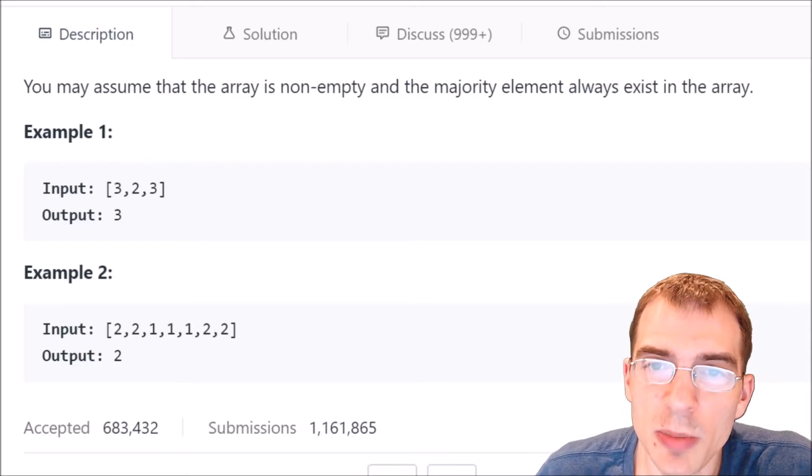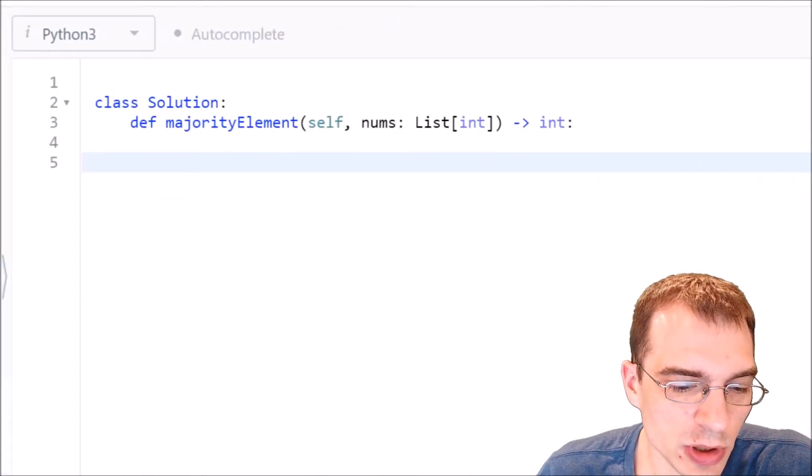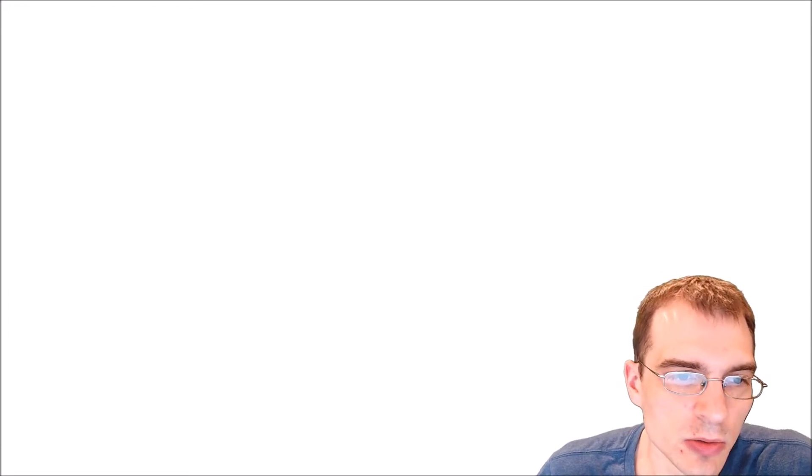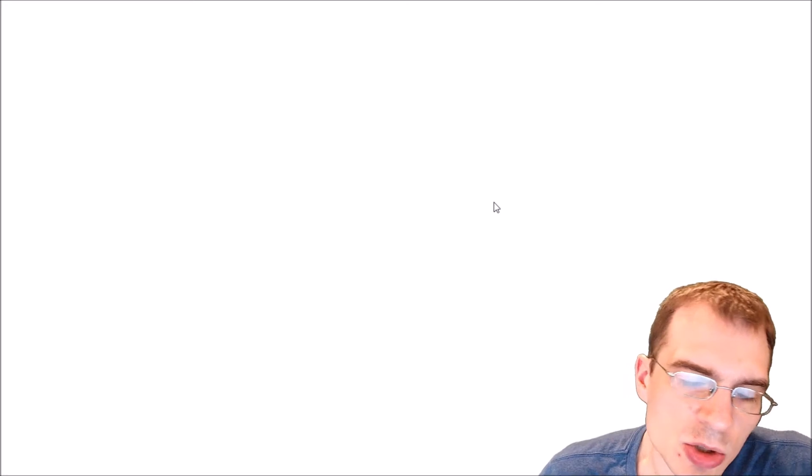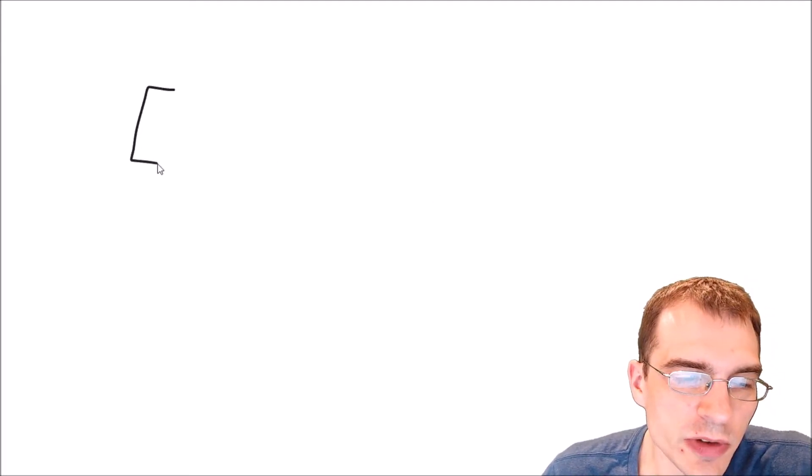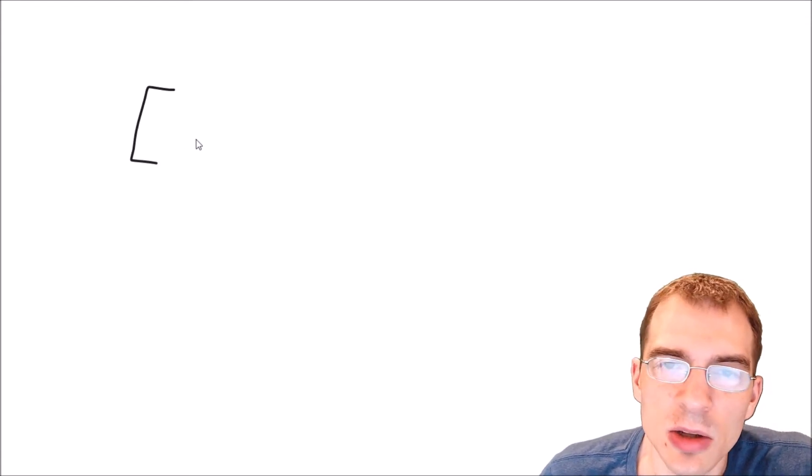So to think through this problem we're going to pull over to the code editor but first we will check our whiteboard and write down how we might be able to approach this problem. So given the way this problem is structured we're basically just given an array and we need to find whatever element occurs the most often.